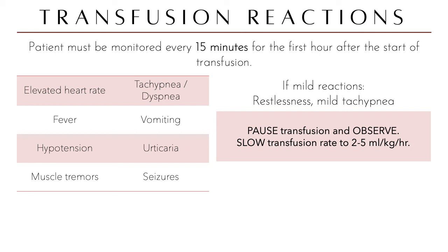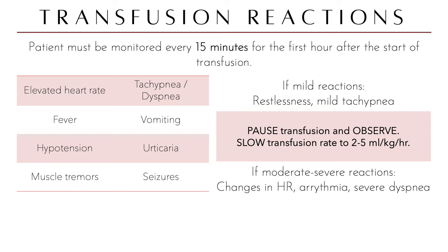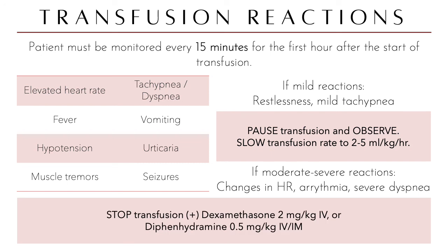If reactions are mild — restlessness or mild tachypnea — pause the transfusion and observe. If the animal settles, resume at a slower rate of 2 to 5 ml per kg per hour. For moderate to severe reactions such as arrhythmia or severe dyspnea, stop the transfusion entirely and administer a steroid or antihistamine. In cases of cardiac arrest, epinephrine may be needed. Clinical judgment is essential: if a patient develops fever during transfusion but would die without it, the benefits and risks must be weighed.